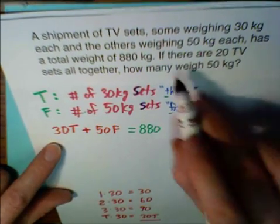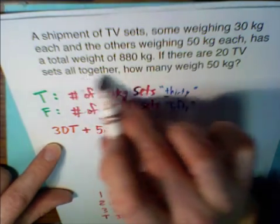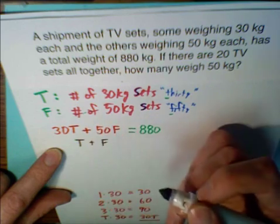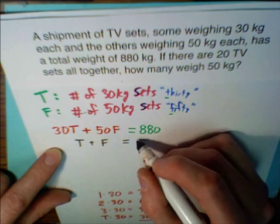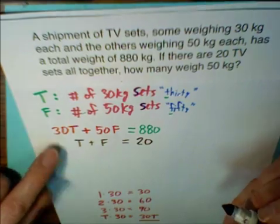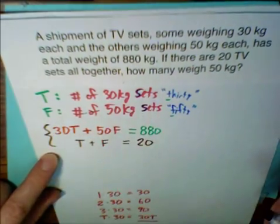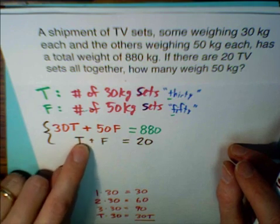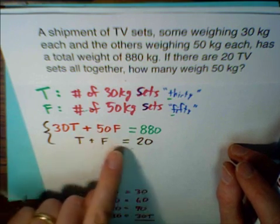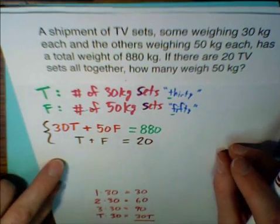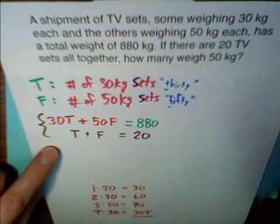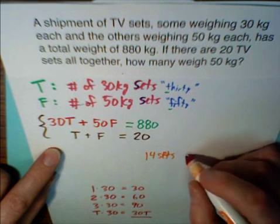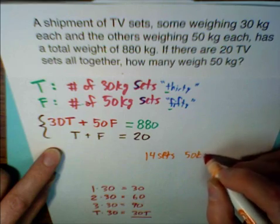Our second equation comes from the fact that there are 20 TV sets altogether. 'Altogether' means sum, so the number of 30-kilogram sets plus the number of 50-kilogram sets equals 20: T + F = 20. This system can be solved using a variety of methods — you might want to use substitution, solving for T as T = 20 minus F and plugging that back in. The answer is that there are 14 sets that weigh 50 kilograms.